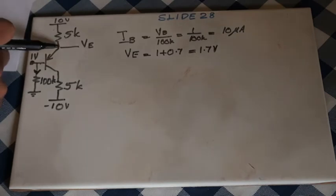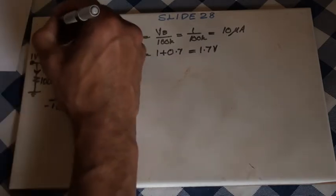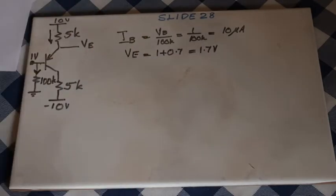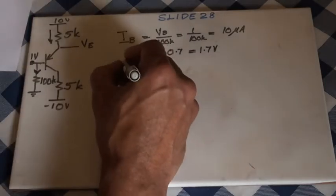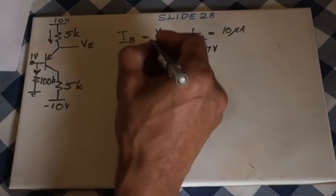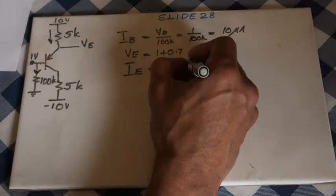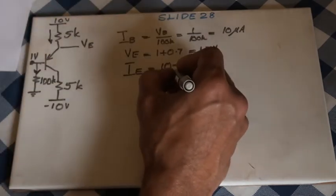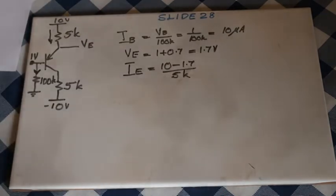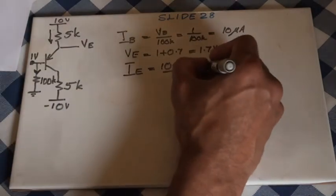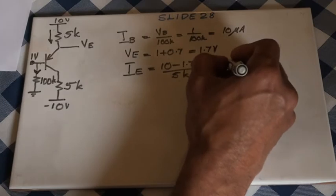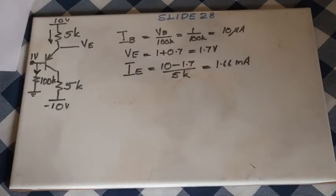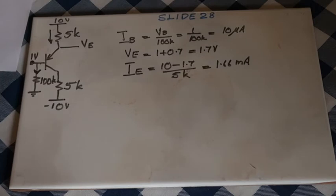Now we have voltage at the emitter, which is 1.7 volts. The remaining calculations become simple enough. We can work out the emitter current: IE equals 10 minus 1.7 divided by 5K, which gives us 1.66 milliamperes.